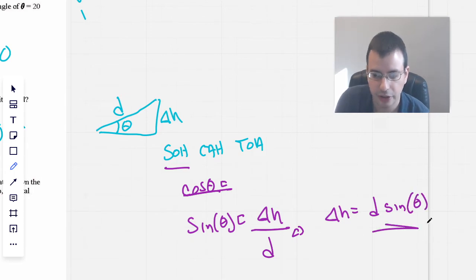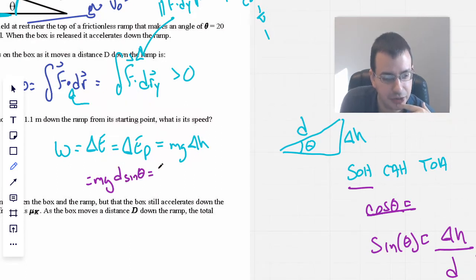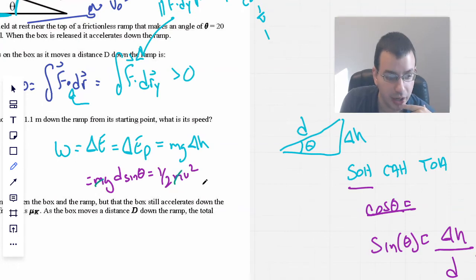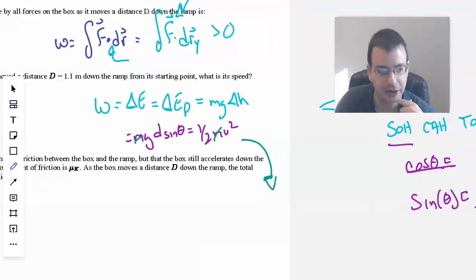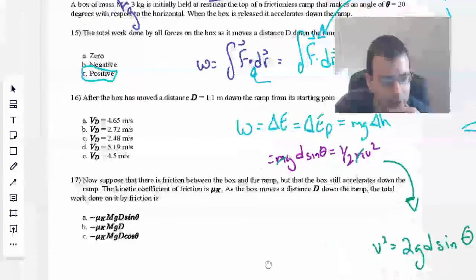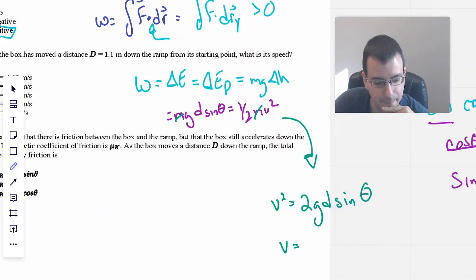Rewriting this one more time, mg d sine of theta, and this will then be equivalent to some sort of kinetic energy, 1 half mv squared. Simplifying, the m's will go away, so the masses become irrelevant. We have v squared equals 2g d sine of theta. V equals, okay, calculator time.